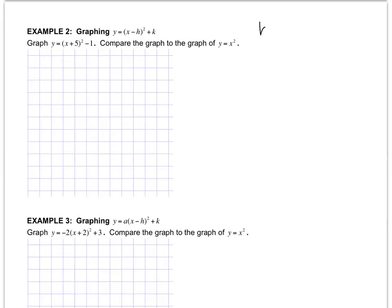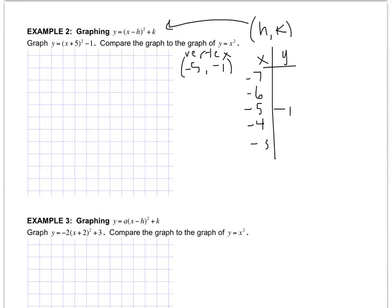Remember that the vertex is (h, k), and this is the vertex setup. So my vertex in this question is actually at the point (-5, -1). So when I set up my table, I'm going to put (-5, -1) in the center, negative 6, negative 7, and I'm going to center my values around that. So pause the video and plug in your values.